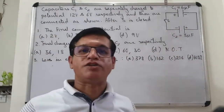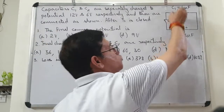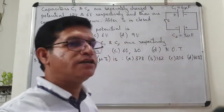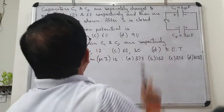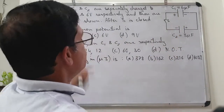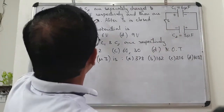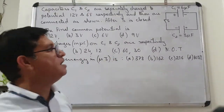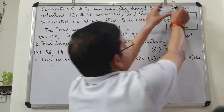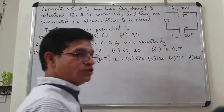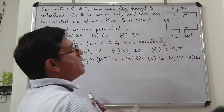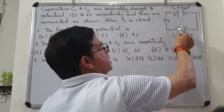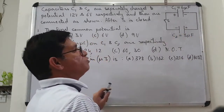Each capacitor was charged separately by connecting to a source. C1 was charged to 12 volt and C2 was charged to 6 volt. After charging, they were disconnected from the source and connected as shown. With the switch open, the positively charged plate of C1 is connected to the negatively charged plate of C2 via the switch.